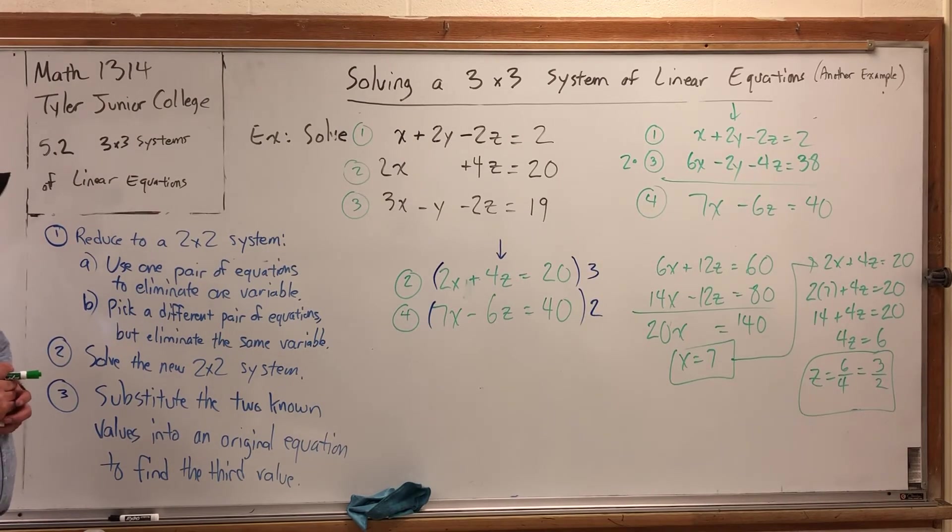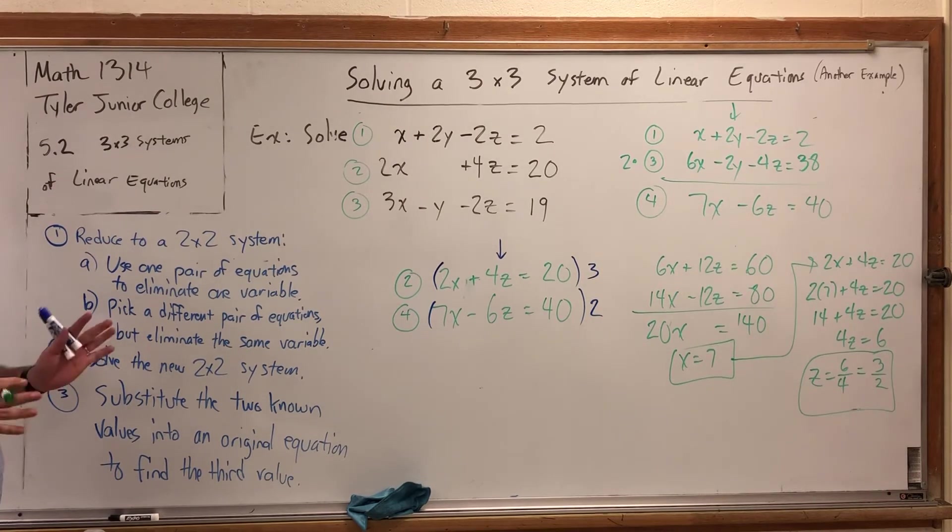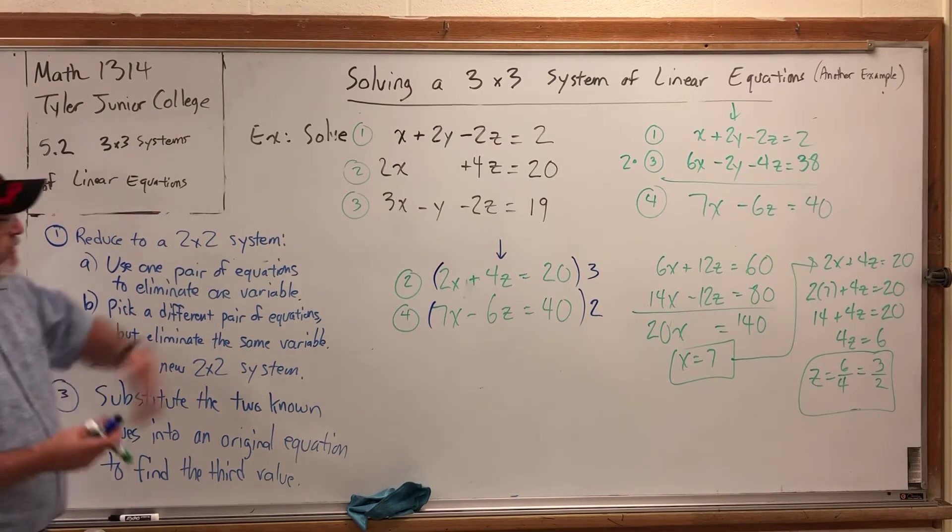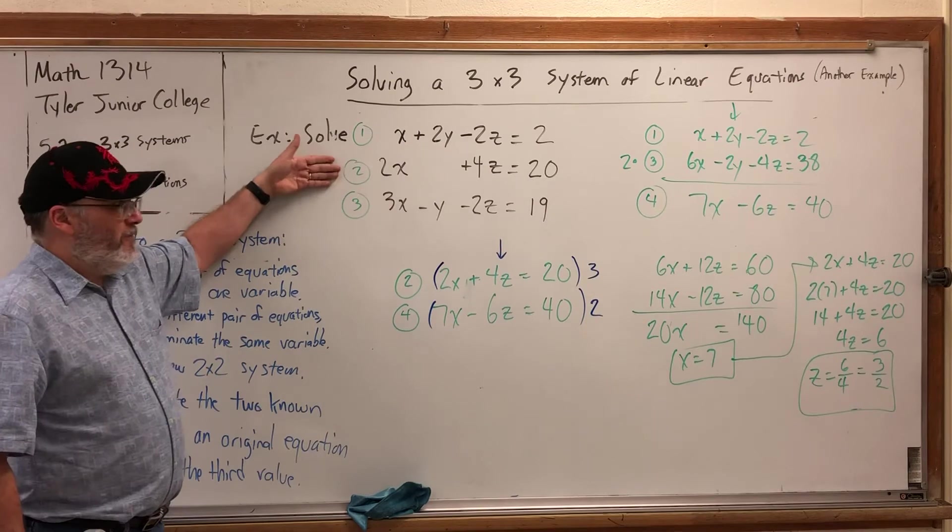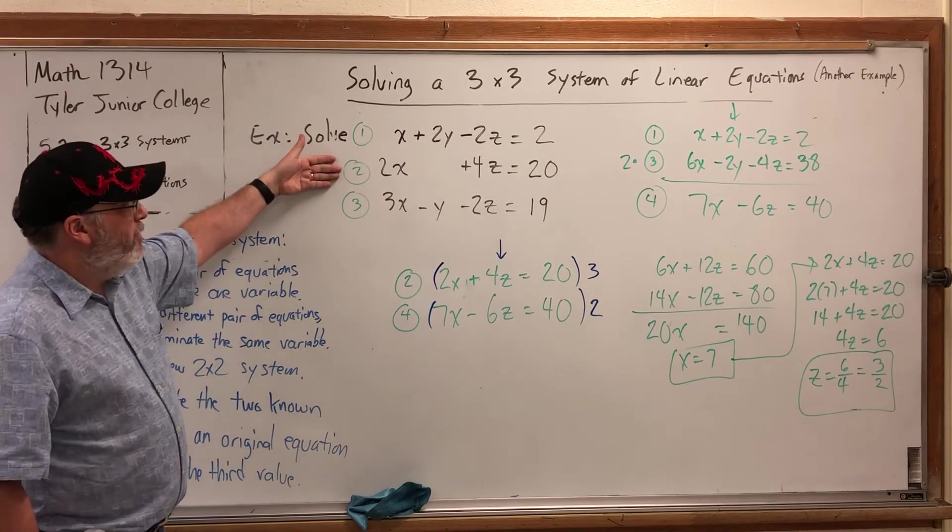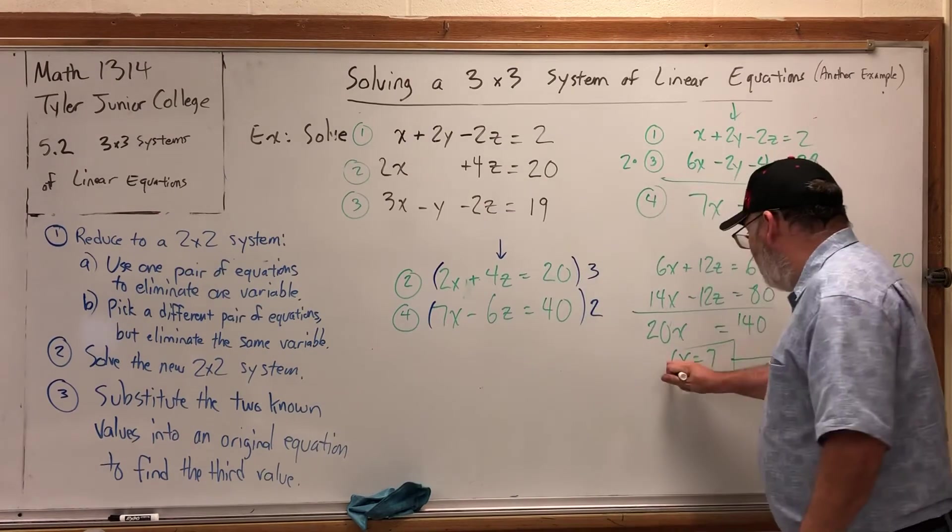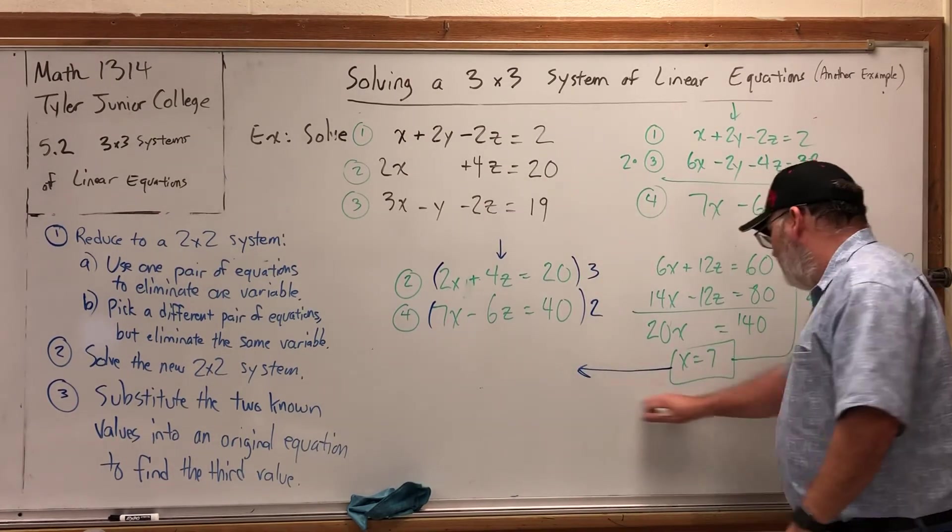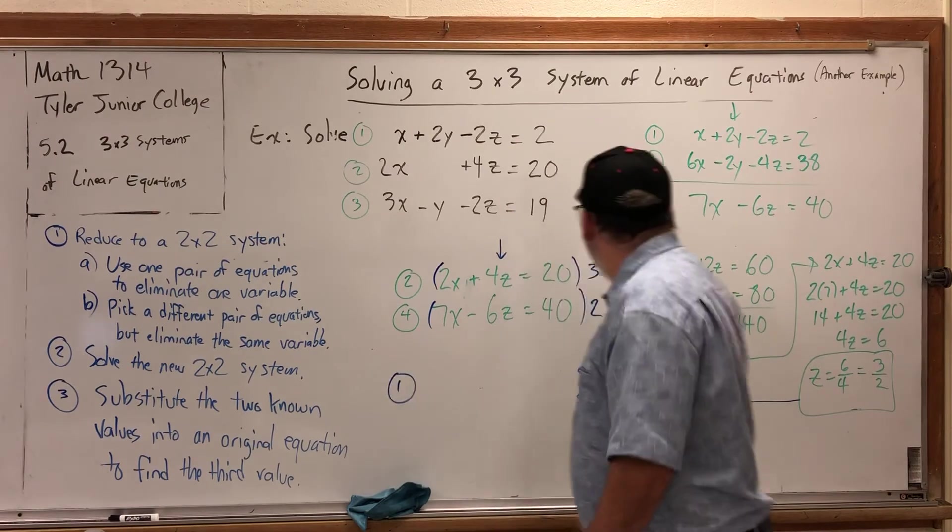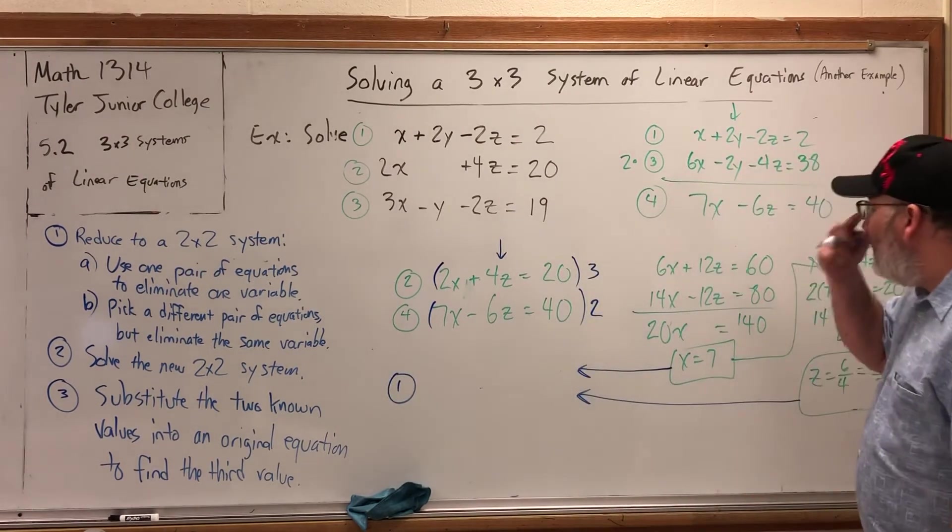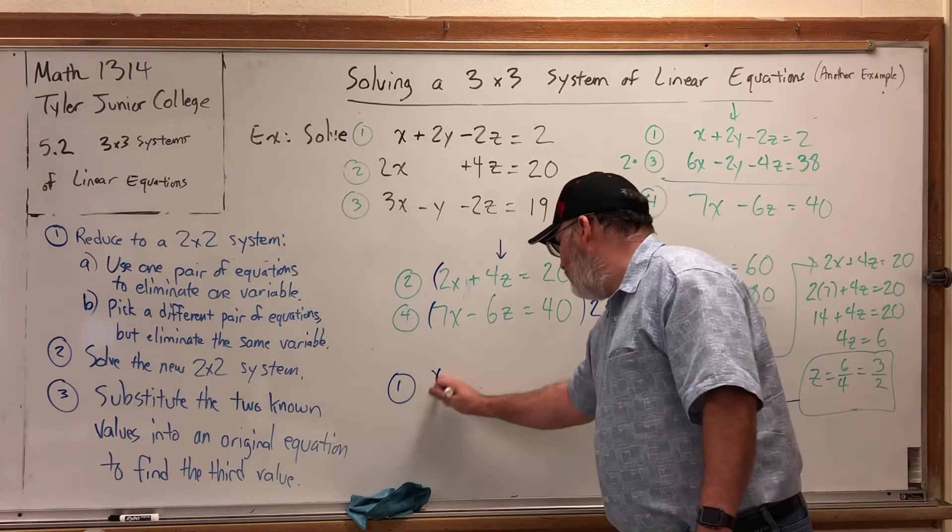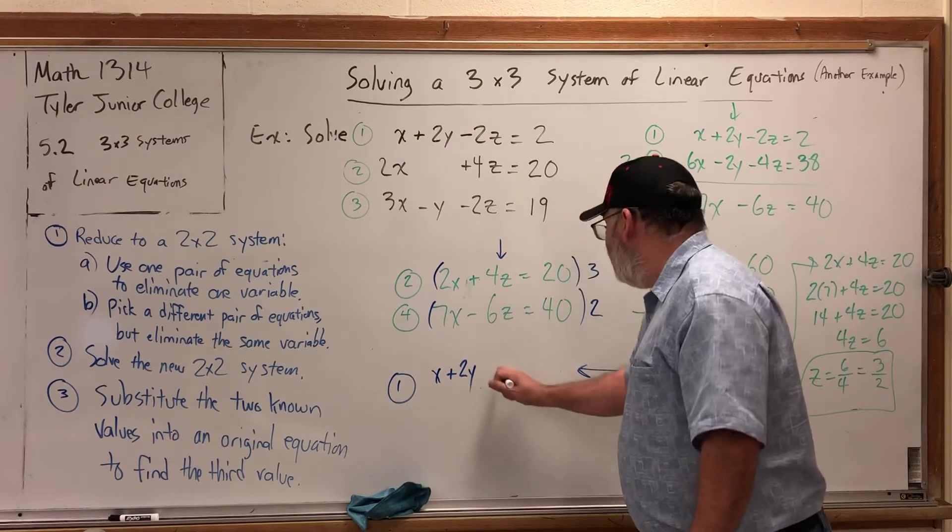To complete the solution, we have to find the missing variable, which is y. Just go back to any original equation. Well, don't go back to this one. You can't solve this one for y. It has no y to solve for. Let's go to equation 1. Let's take the two values that we know and substitute them back into equation 1.